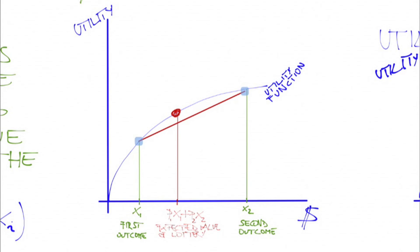The expected utility of the lottery, on the other hand, is the probability-weighted average of the Bernoulli utility of one outcome and the Bernoulli utility of the other outcome. It is therefore represented by the point on the line between those two utilities that is right above the expected value of the lottery.